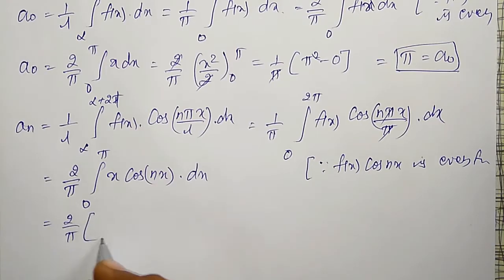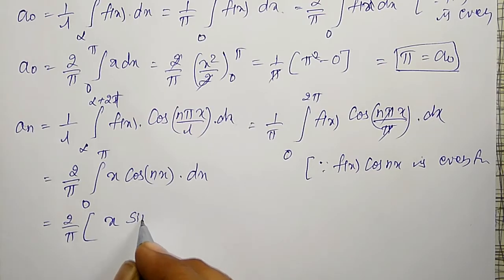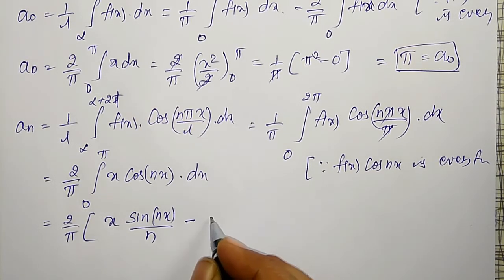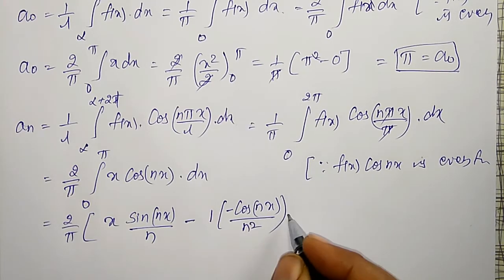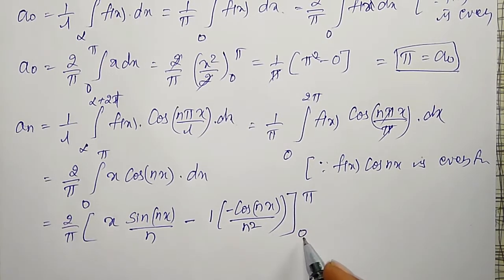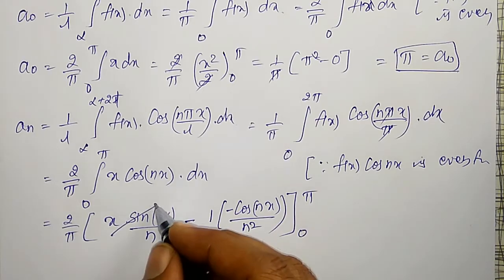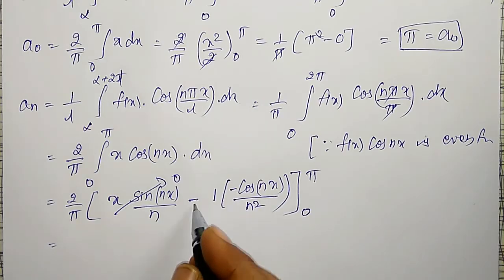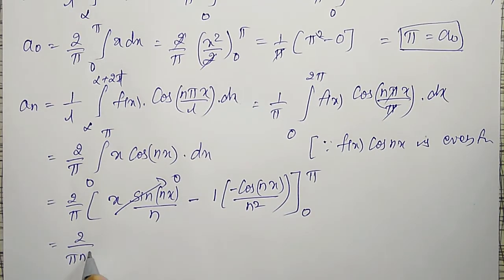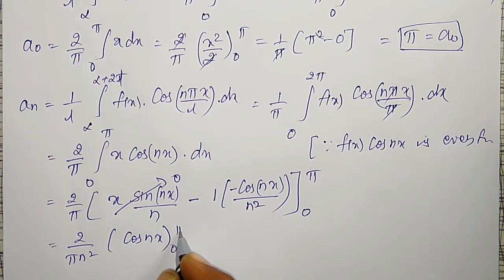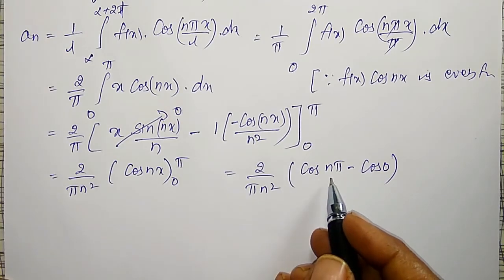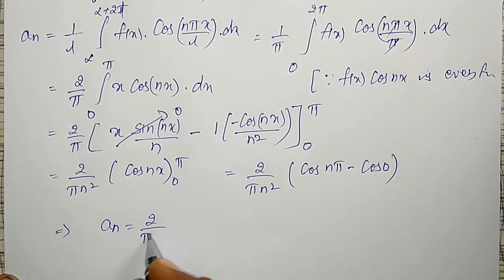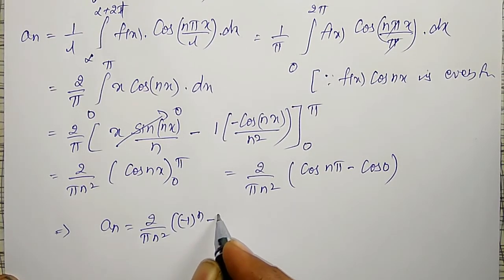This integration I have to do using Bernoulli's rule. That gives (2/π) × [x sin(nx)/n − (1)(−cos(nx)/n²)] from 0 to π. At both limits π and 0, the sin-containing term becomes 0. Only the cosine term remains: (2/π) × (1/n²) × [cos(nx)] from 0 to π = (2/πn²)(cos(nπ) − cos(0)) = (2/πn²)((-1)ⁿ − 1). Therefore, aₙ = (2/πn²)((-1)ⁿ − 1).